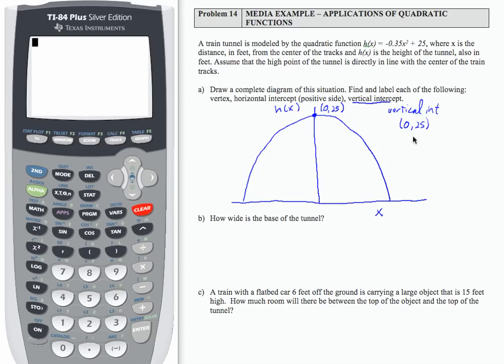If we want to find the vertex, we can start by finding the X coordinate, which is negative B over 2A. But there is no B value, so that means this is 0. Well, when the input is 0, the output is 25. So I know the vertex is 0, 25. So the vertical intercept and the vertex are the same thing.